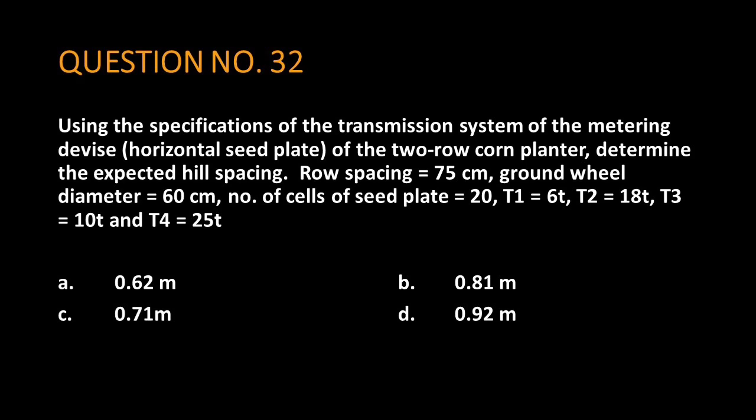Row spacing is 75 cm, ground wheel diameter is 60 cm, number of cells of seed plate is 20, T1 is 6 T, T2 is 18 T, T3 is 10 T and T4 is 25 T.